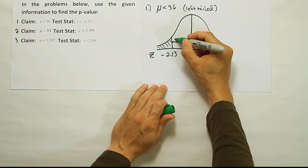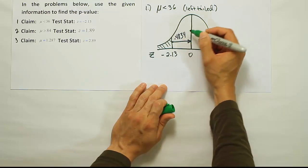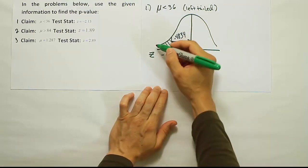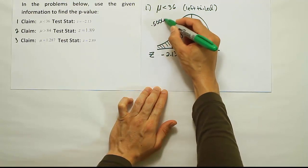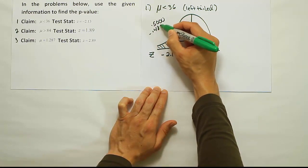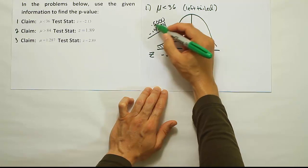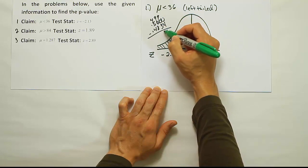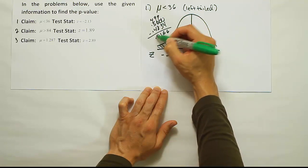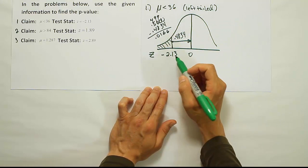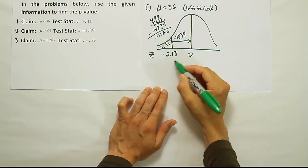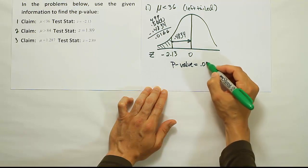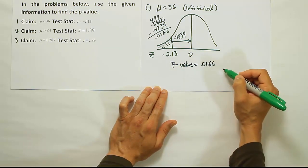We found the area here to be 0.4834. Now we have to do 0.5 minus that area to get the area in the tail. So 0.5 minus 0.4834 - doing some old-school borrowing here - that'll be 0.0166. So the area in the tail is 1.66%, which means the p-value is equal to 0.0166, or 1.66%.